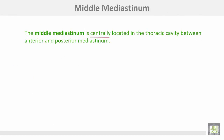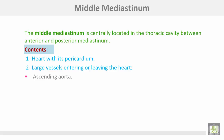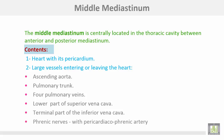The middle mediastinum is centrally located in the thoracic cavity between the anterior and posterior mediastinum. Its contents include the heart with its pericardium, and the large vessels entering or leaving the heart: the ascending aorta, pulmonary trunk, four pulmonary veins, the lower part of the superior vena cava, and the terminal part of the inferior vena cava, in addition to the phrenic nerve with the pericardiacophrenic artery.